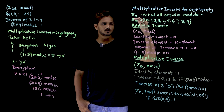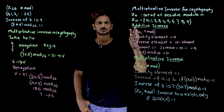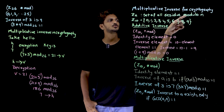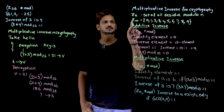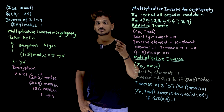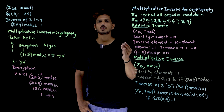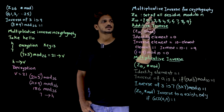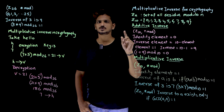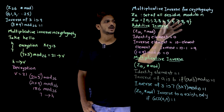Before we move on to multiplicative inverse, let us refresh a few concepts that are very helpful for us. Zn is the symbol used to give the set of all residue modulo n. For example, Z10 contains elements 0 to 9 — those are the values you get for modulus 10. If it is Z26, the elements are 0 to 25; Z29 gives 0 to 28.